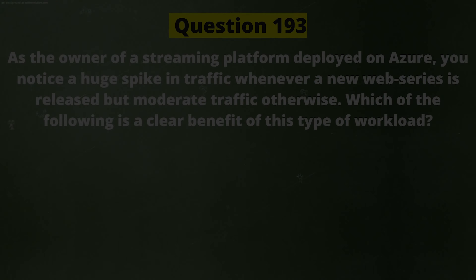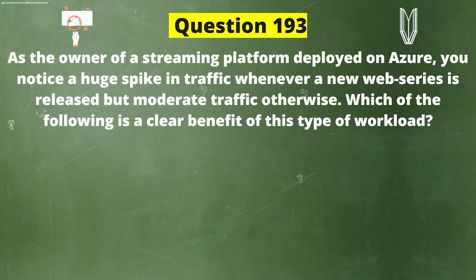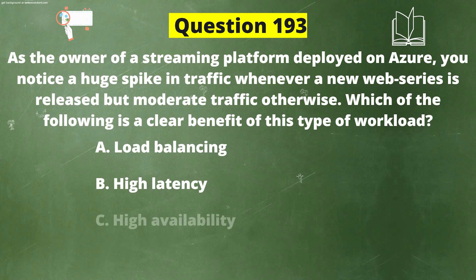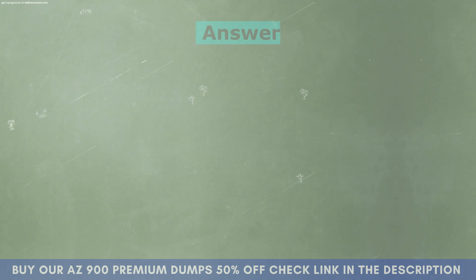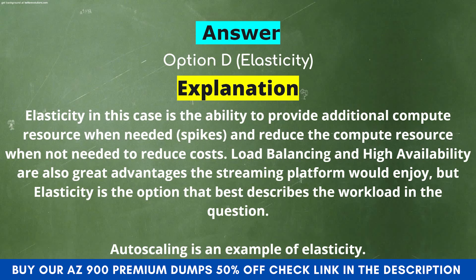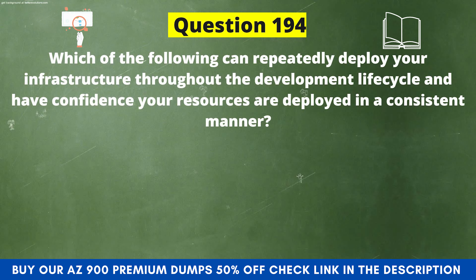Next question: As the owner of a streaming platform deployed on Azure, you notice a huge spike in traffic whenever a new web series is released but moderate traffic otherwise. Which of the following is a clear benefit of this type of workload? The options are: A) Load Balancing, B) High Latency, C) High Availability, D) Elasticity. The correct answer is option D: Elasticity. Explanation: Elasticity in this case is the ability to provide additional compute resources when needed during spikes, and reduce compute resources when not needed to reduce cost. Load balancing and high availability are also great advantages, but elasticity best describes the workload. Auto scaling is an example of elasticity.